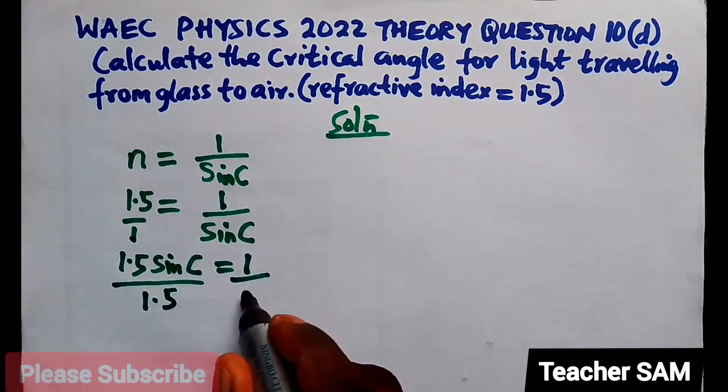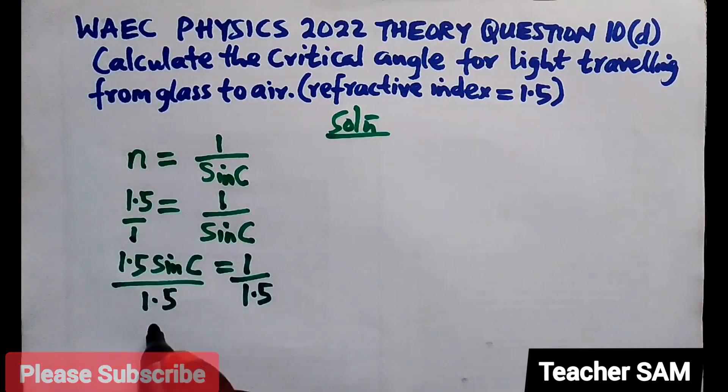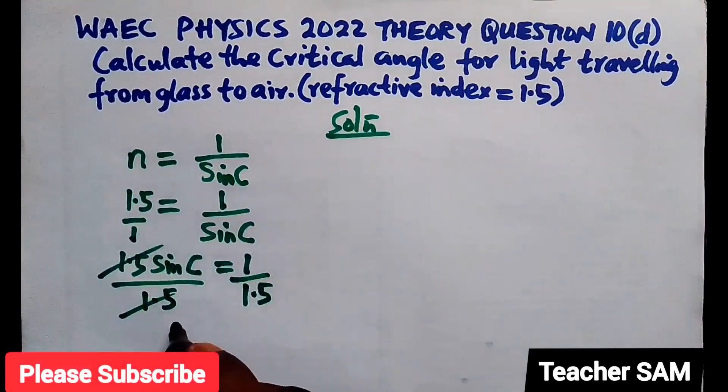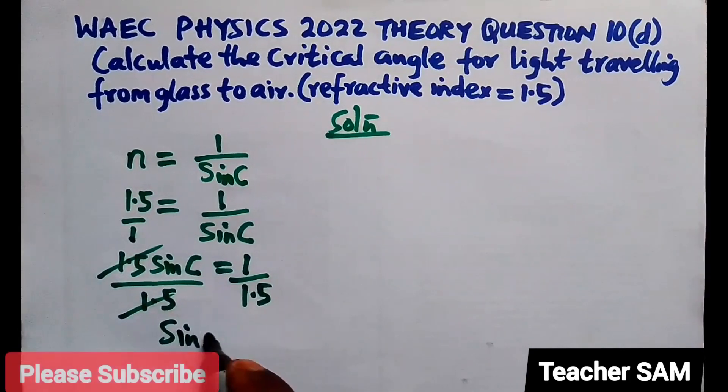Divided by 1.5 on both sides. If you do that, this cancels and you're left with sine c.